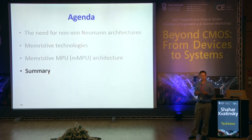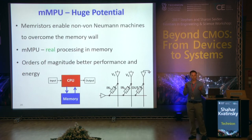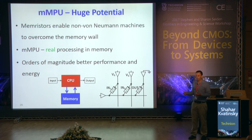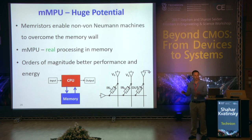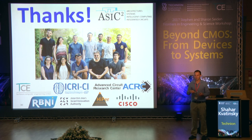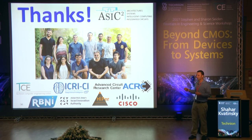To conclude: using emerging memory technologies enables non-von Neumann architectures. The MMPU gives us real processing in the memory, solving the von Neumann bottleneck by processing data inside the memory — not nearby. Once we complete the entire system design and resolve the open questions, we can benefit from orders of magnitude improvement both in performance and energy. I want to thank the students who did the hard work of this research and also helped organize this workshop. Thank you.